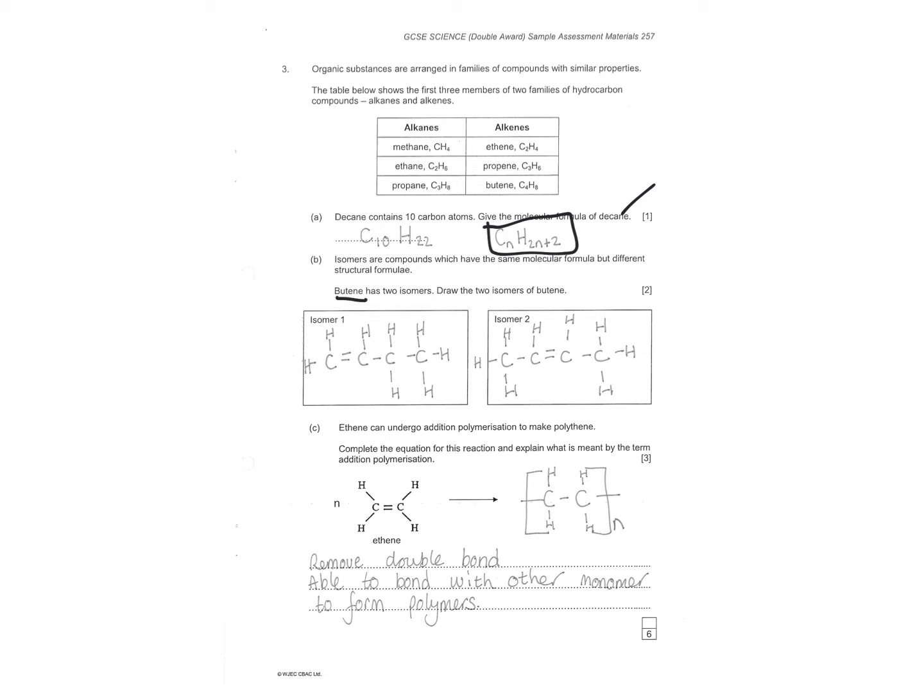Butene has two isomers. Draw the two isomers. One would have been the double bond of the first carbon. The second would be the double bond of the second carbon. Explain what happens when they undergo polymerization. Polymerization is a lot easier than you think. Remove the double bond. Put it in the square bracket. Remember the N. Stretch it out so it can form loads of them. Polymers. Remove double bond. Able to bond with other monomers to form polymers. This is what would happen is another one would come along here and you'd join indefinitely to form polymers. Polymers is a fancy word for plastics.